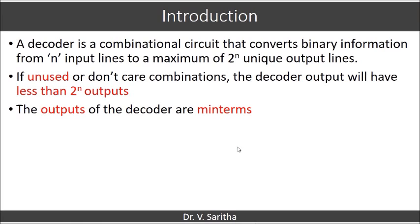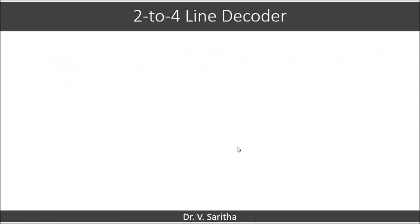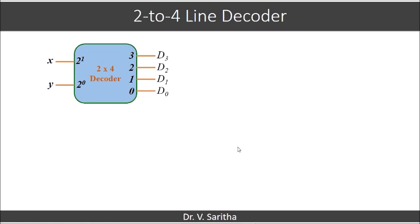The output of the decoder is in the form of minterms and here we will see an example of 2-to-4 line decoder. 2-to-4 line decoder indicates that we will be having 2 input lines and 4 output lines, and here x and y are represented as inputs and d0, d1, d2, d3 are output lines.